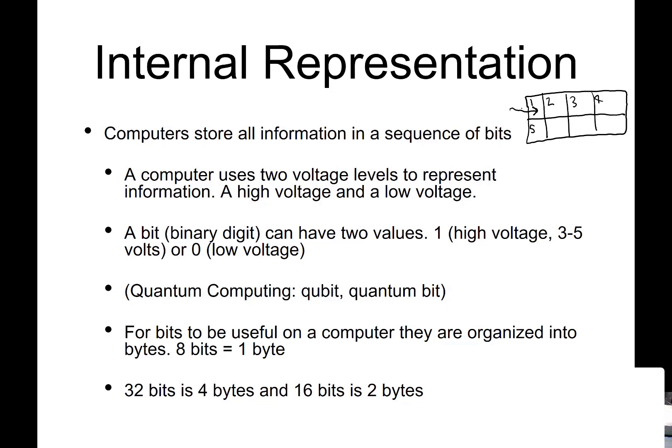A computer normally organizes the bits into groups of eight bits that are one byte. And so if we have 32 bits, that would be four bytes. And if we have 16 bits, that would be two bytes. So you're familiar with that terminology, because you hear these terms used a lot.